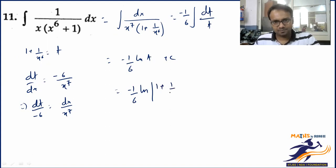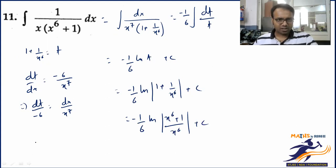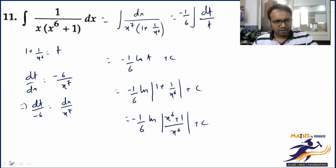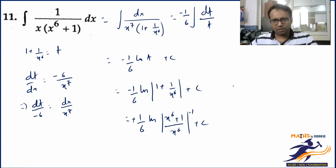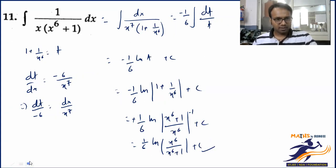Don't forget + C. So the answer is (-1/6) · log|1 + 1/x⁶| + C. Simplifying: that becomes (-1/6) · log|(x⁶ + 1)/x⁶| + C. The book has the numerator flipped, but don't be alarmed — you have a minus sign outside. Adjusting the minus sign, the answer matches. That's how you can do this one.